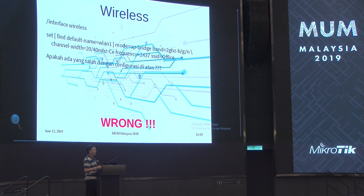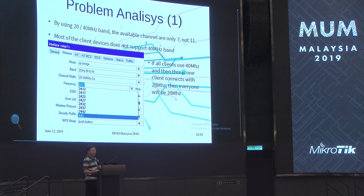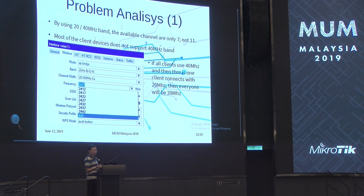The second problem is 20/40 MHz because most devices only support 20 MHz — not many support 40 MHz. If the AP uses 40 MHz and one client connects at 20 MHz, all clients will fall back to 20 MHz. Problem analysis: by using 20/40 MHz, the available channels are only 7, not 11. When using 20 MHz only, channels 1 through 11 are available. But with 20/40 MHz, it's only channels 1 through 7 — channels 8 to 11 are missing. Most client devices do not support the 40 MHz band. If all clients use 40 MHz and then one client connects at 20 MHz, then everyone drops to 20 MHz.